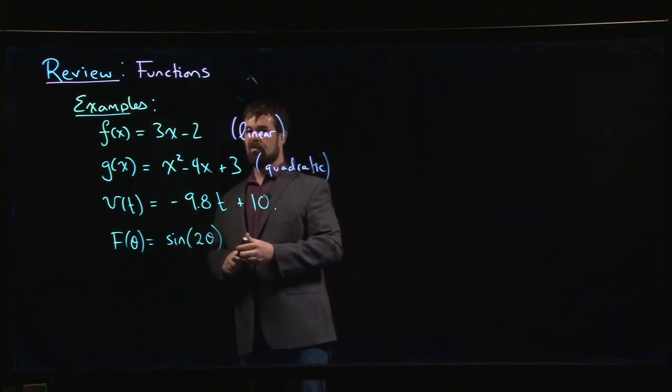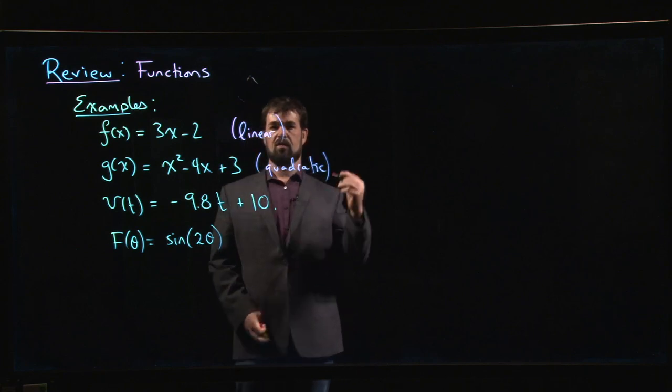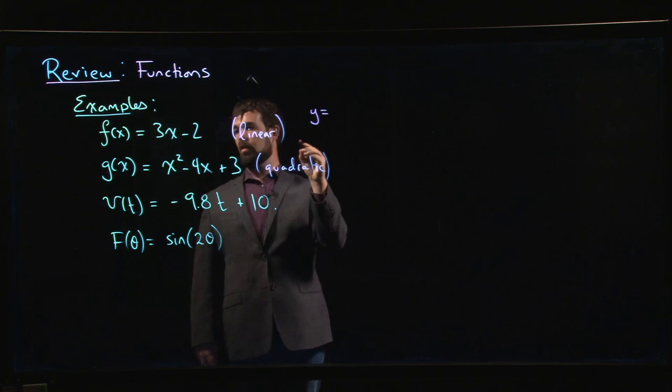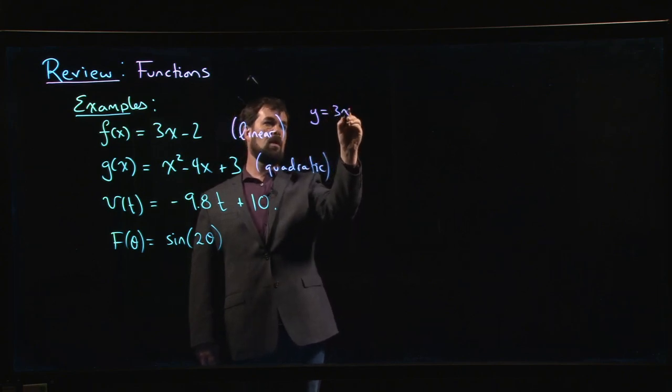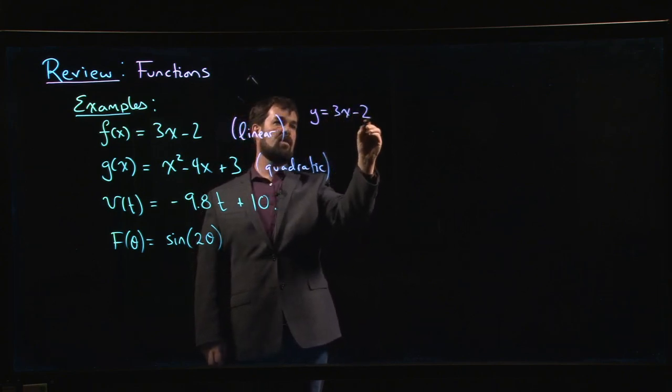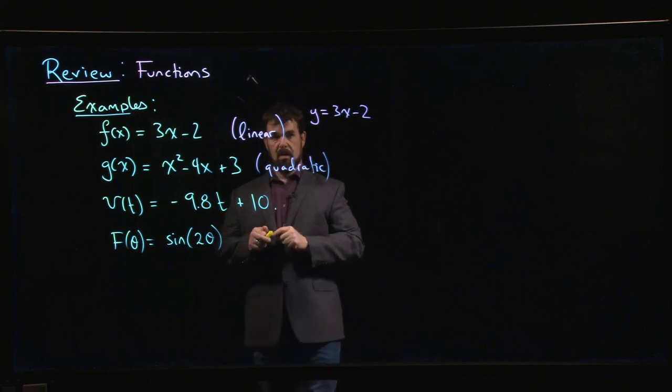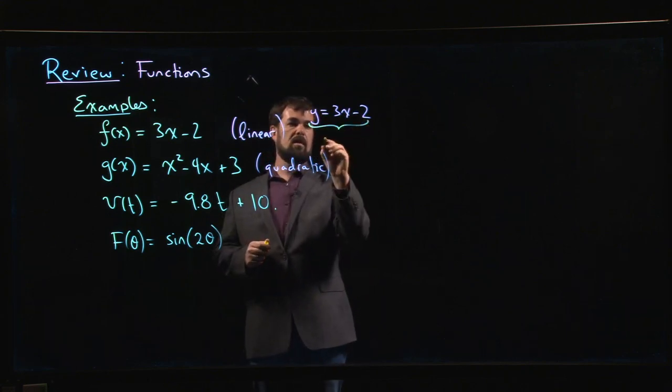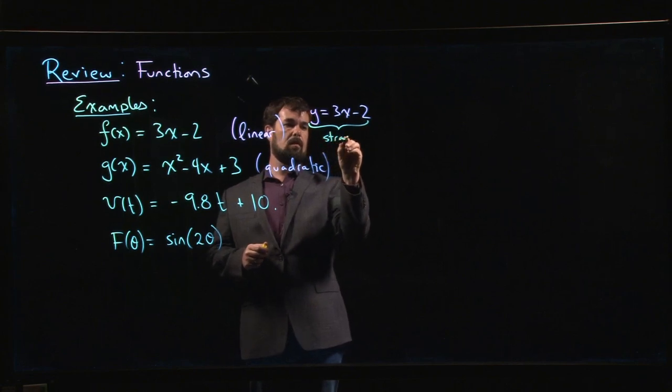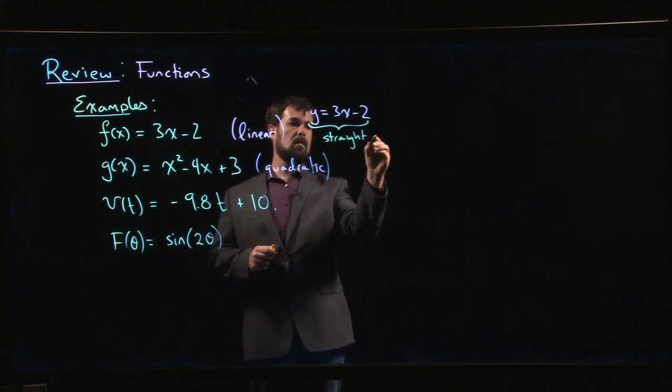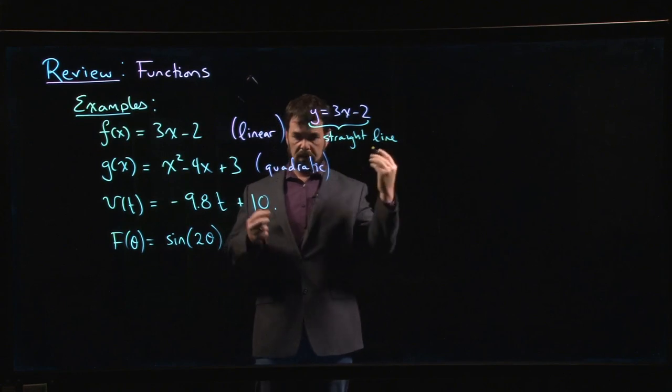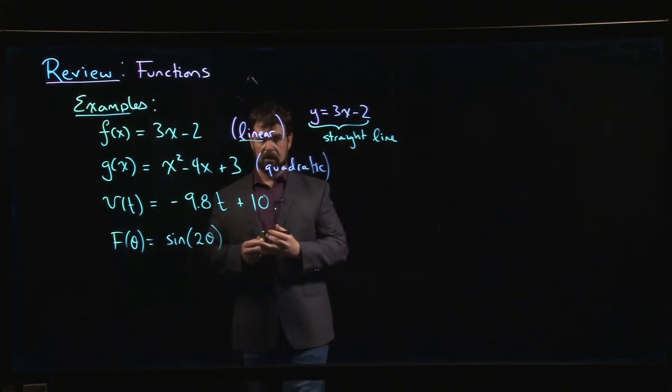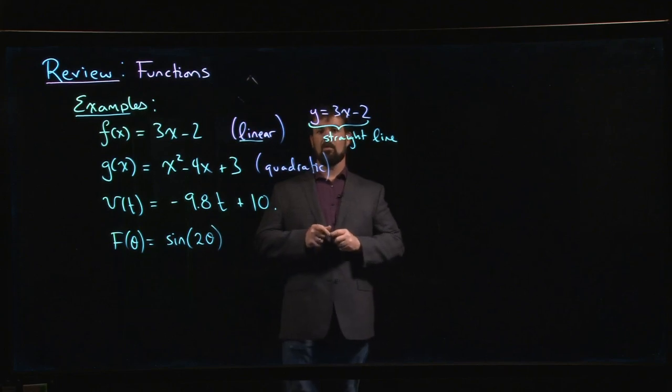And of course, the name linear here - why do we call this a linear function? Well, it's a linear function because if you were to graph it, if you were to set y = f(x), so y = 3x - 2, then of course we know that this is just a straight line. Hence, linear. You see the word line in linear.